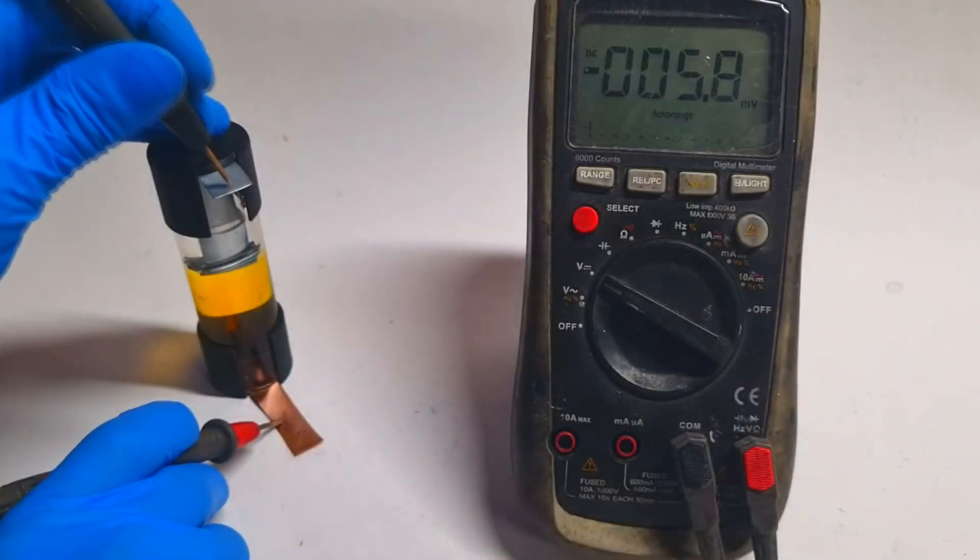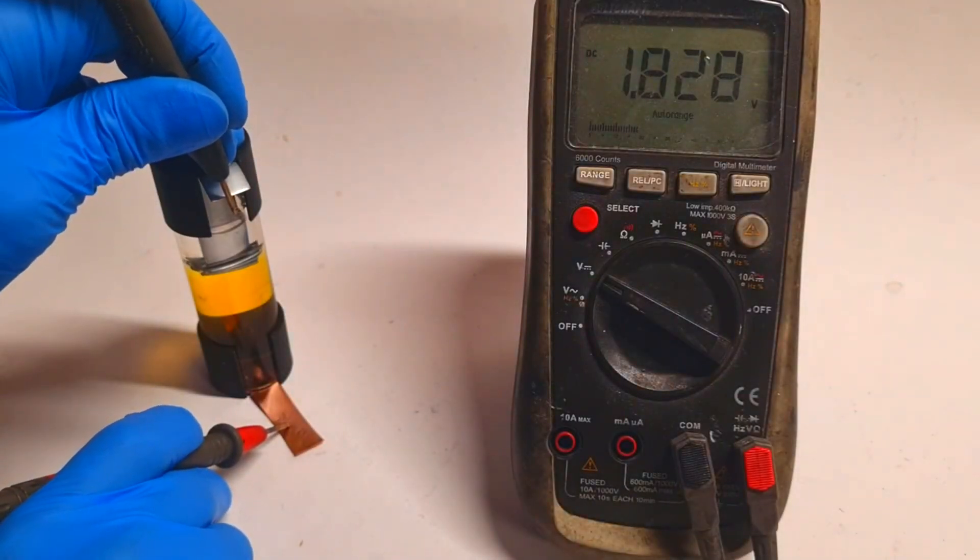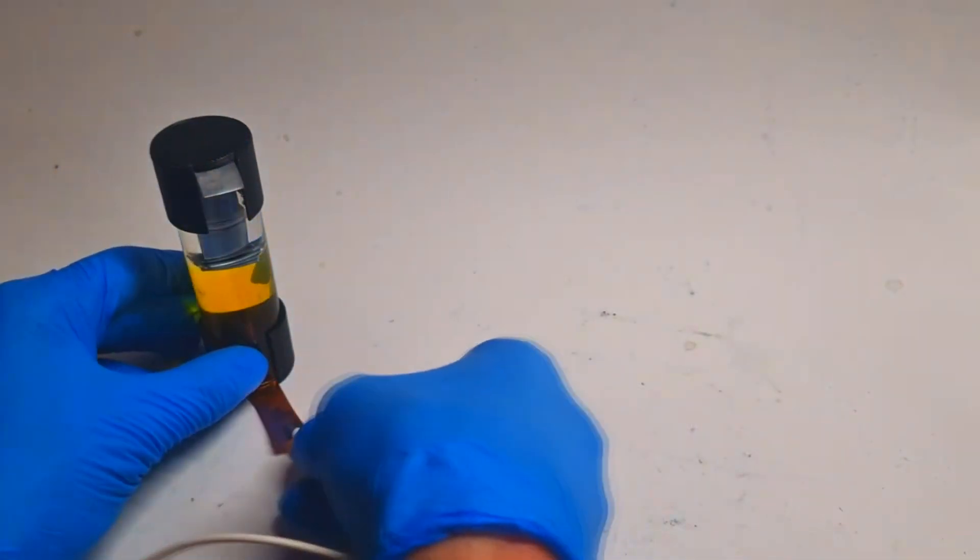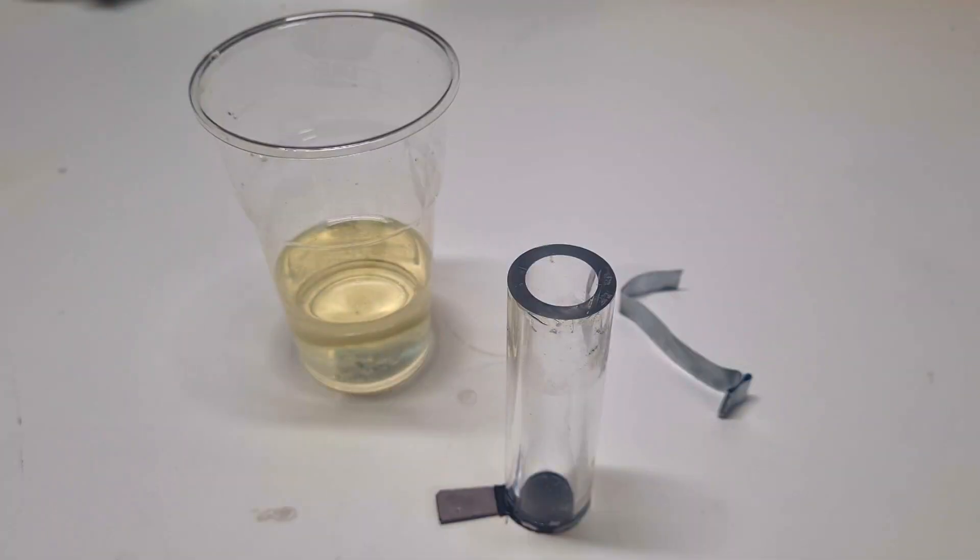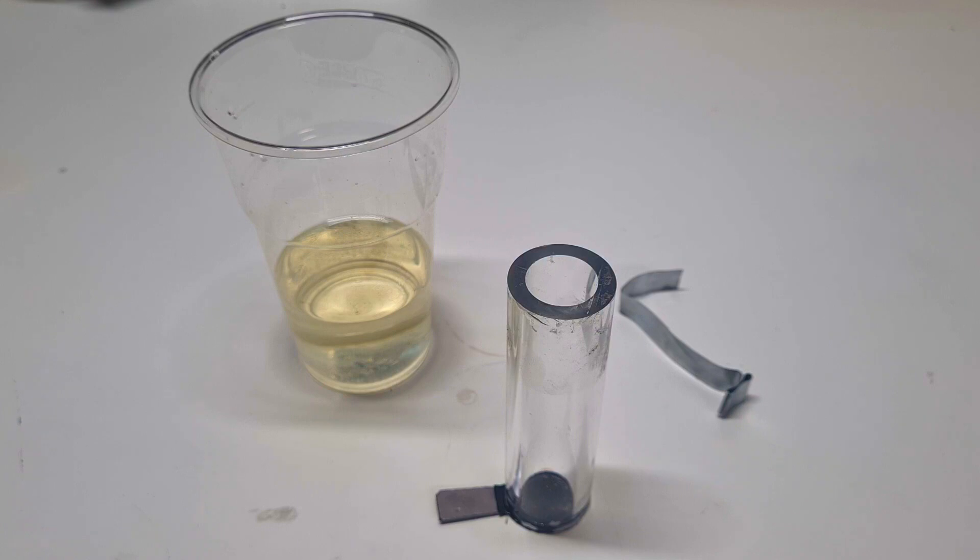I made some zinc-bromine gravity batteries, and if you want to see these videos, the link will be in the video description. In this video I will not make another zinc-bromine gravity battery because I was thinking to replace the bromine with iodine.